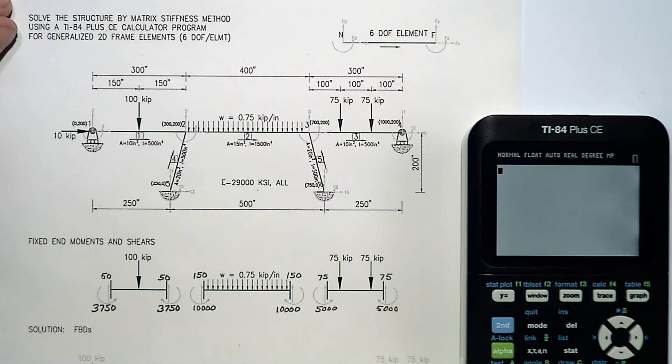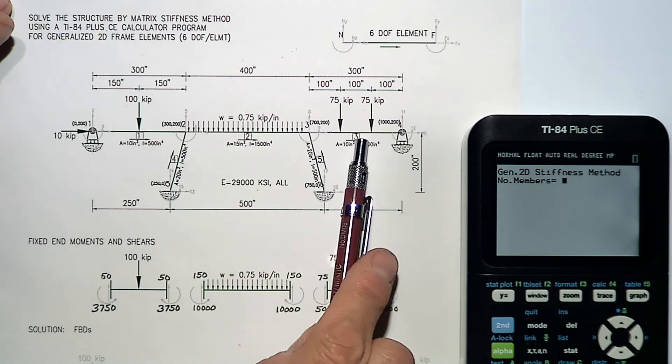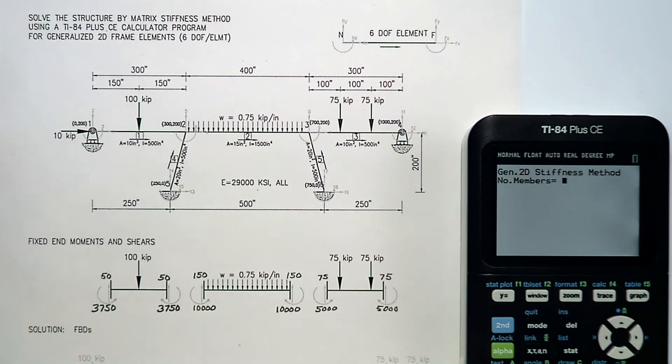With my fixed end moments and shears computed, I'm going to show how the program works. My program is called FEM General. First, it asks how many members. I have one, two, three, four, five numbered members. I have six nodes.